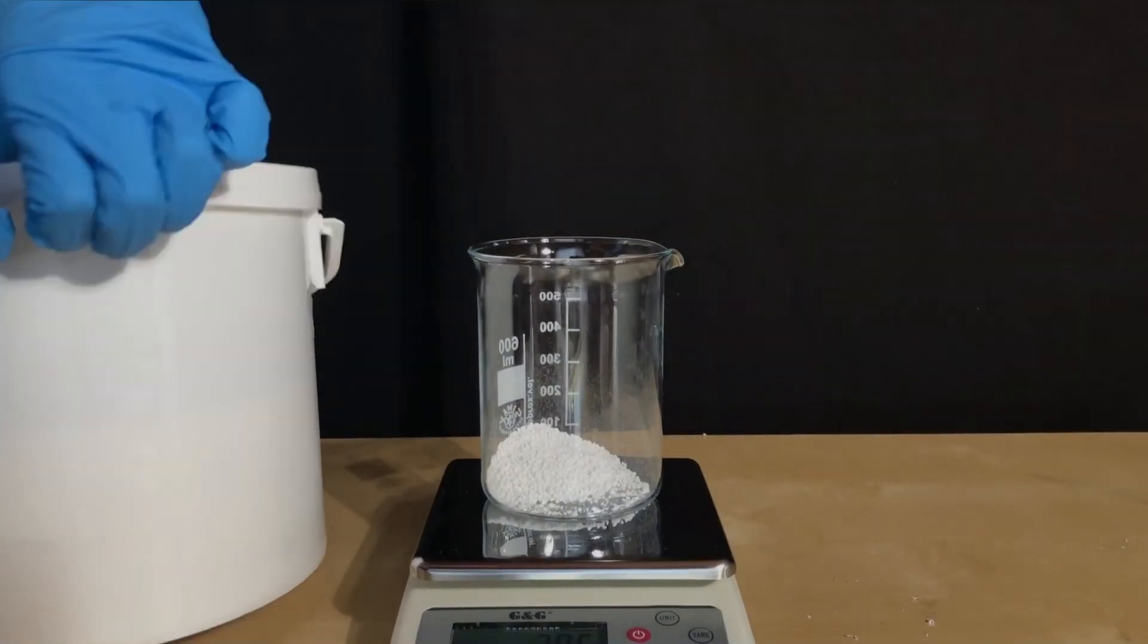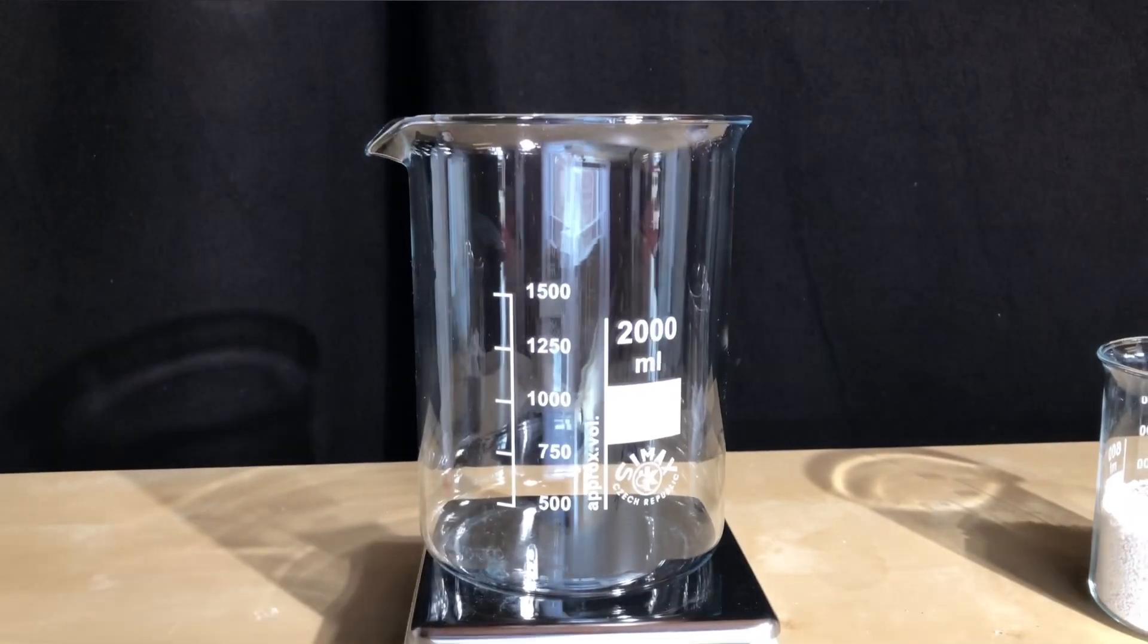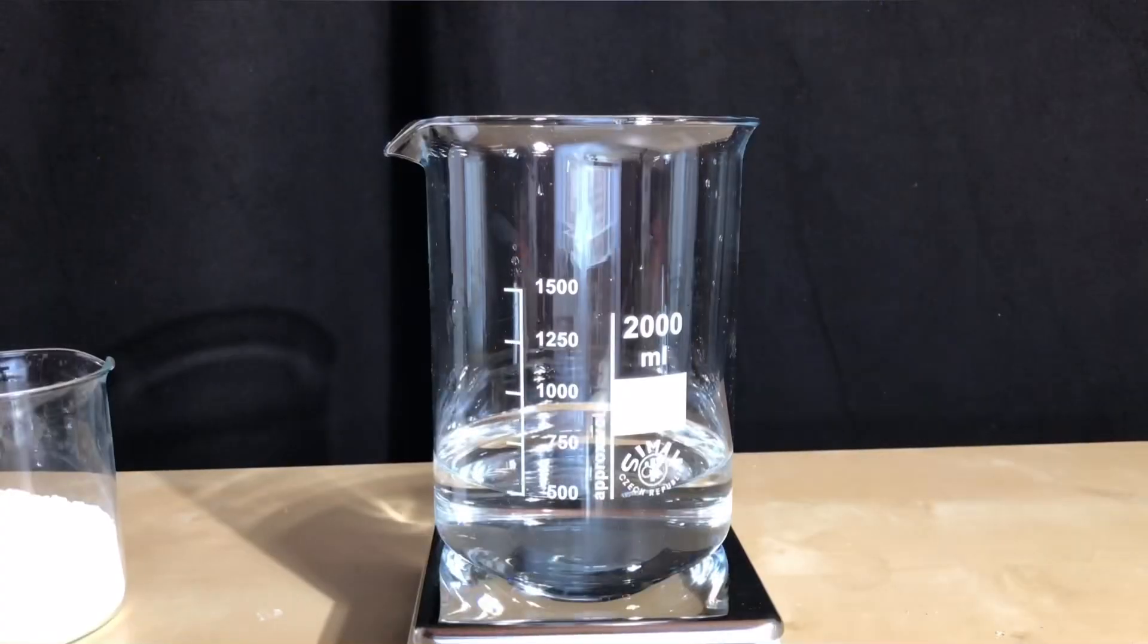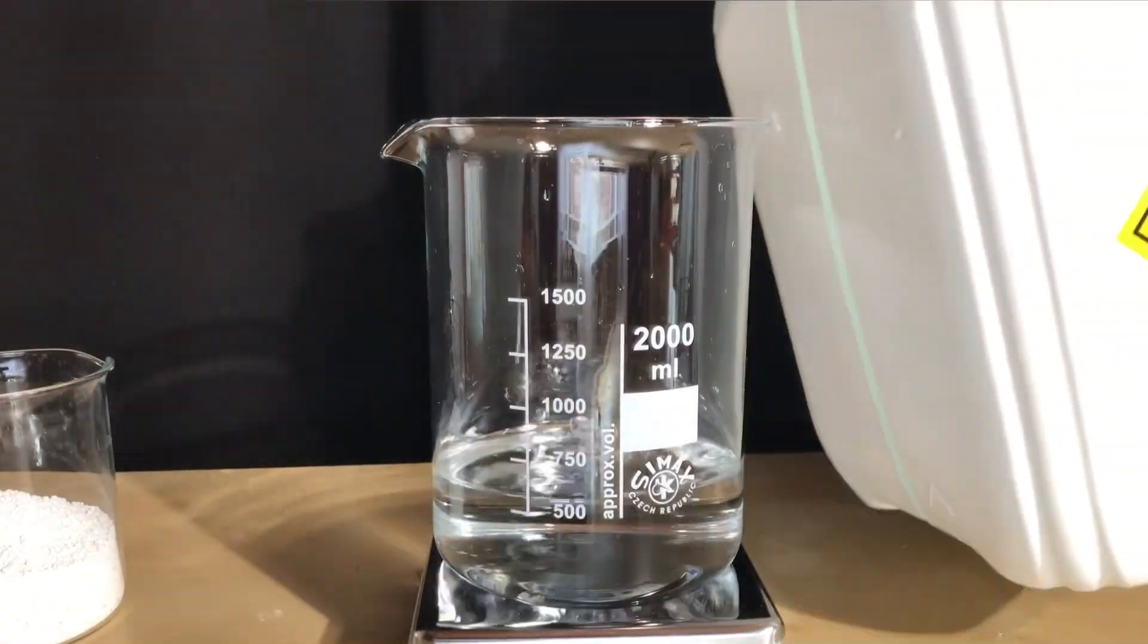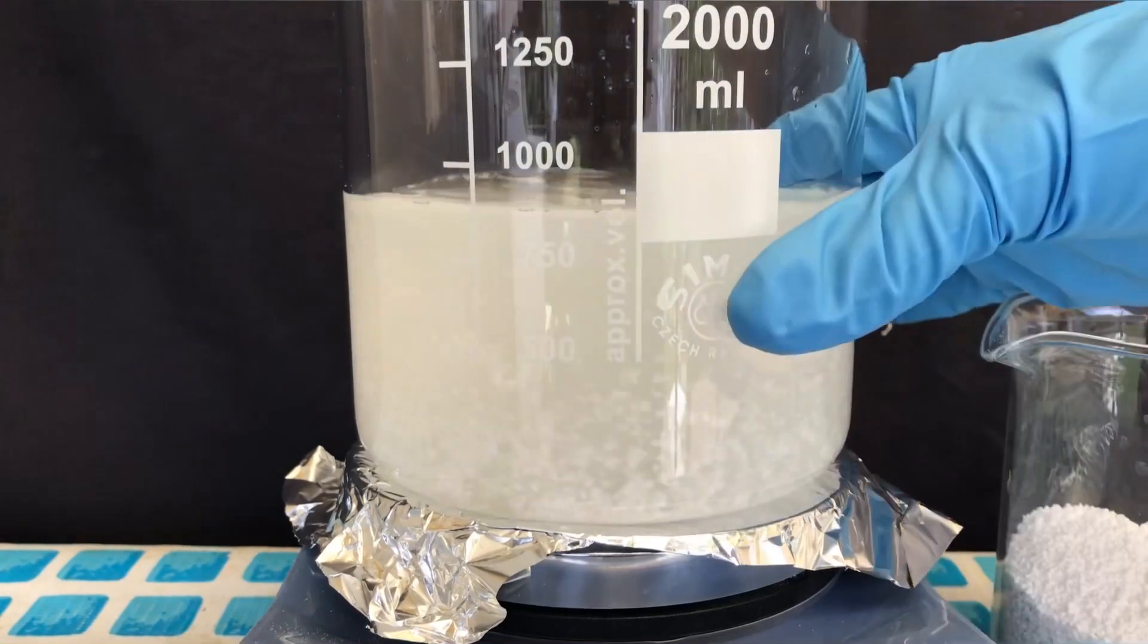We began by weighing out anhydrous calcium chloride and afterwards measured out about 750 ml of 11.9% hydrogen peroxide. The rest of it was added later on. Keep in mind, I cooled the hydrogen peroxide down using a fridge.